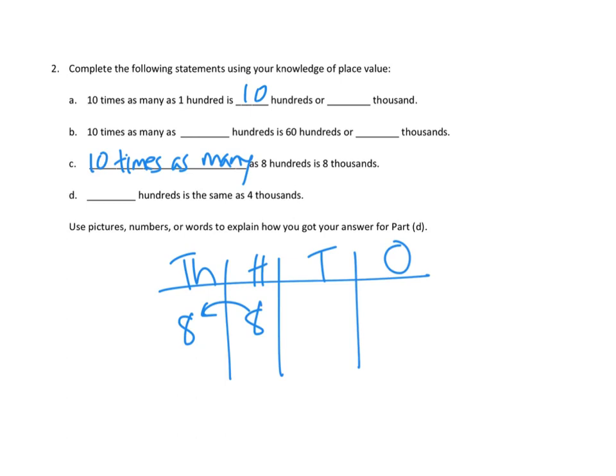And D, I'm going to leave for you. But the question is blank hundreds is the same as four thousands. So I'm going to let you maybe work on your own place value chart to try to figure out 2D. And then you're going to have to use pictures, numbers, or words to explain how you got your answer for part D. I might use a place value chart, but you might use something else. You might use your own words, pictures, or straight up numbers.